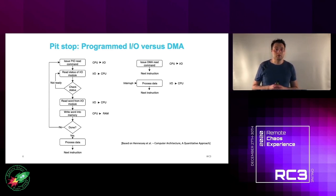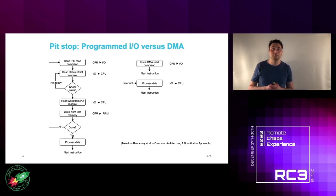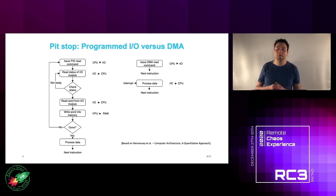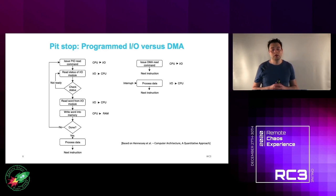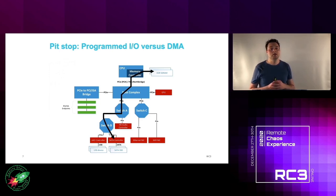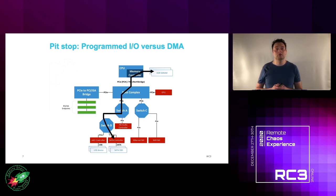A second method called Direct Memory Access was eventually developed. The CPU issues a DMA read command and can immediately move on to the next independent instruction. At some point the data is made available by the third-party device, which copies the data directly into system RAM and then raises an interrupt with the CPU. For example, if the CPU requests data from a SATA SSD, the SATA controller fetches the data and places it directly into system RAM.